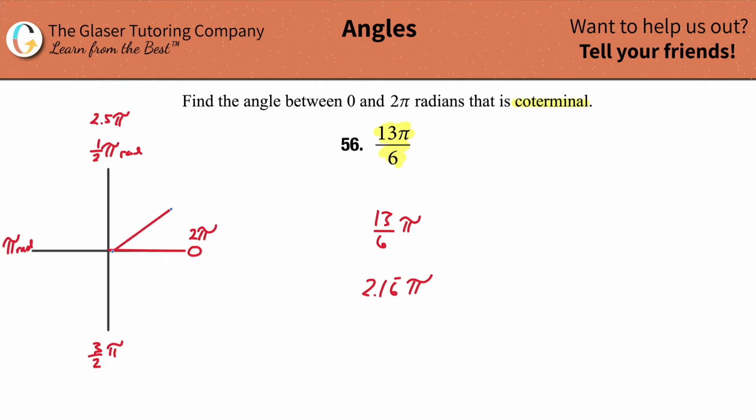We're starting at 0. Half of a π. Full π. Three halves π. Two π. And maybe that's 16 hundredths of the way to 2.5. So maybe it's right about here. Roughly.